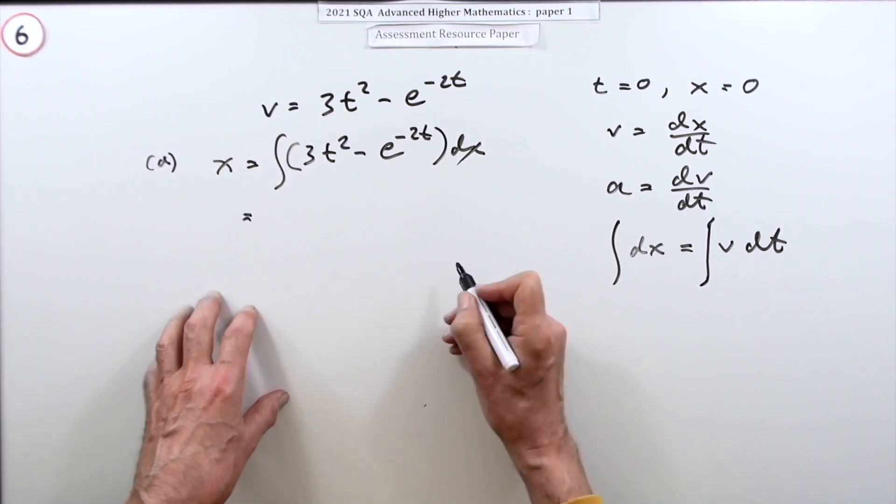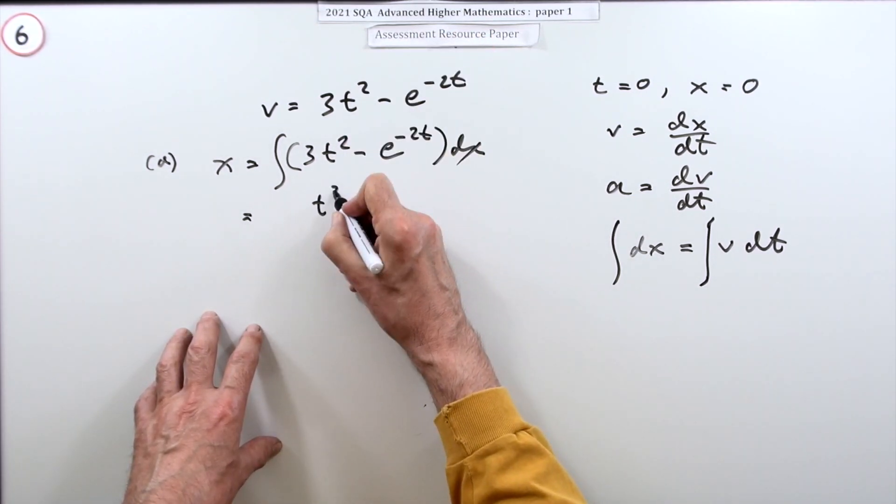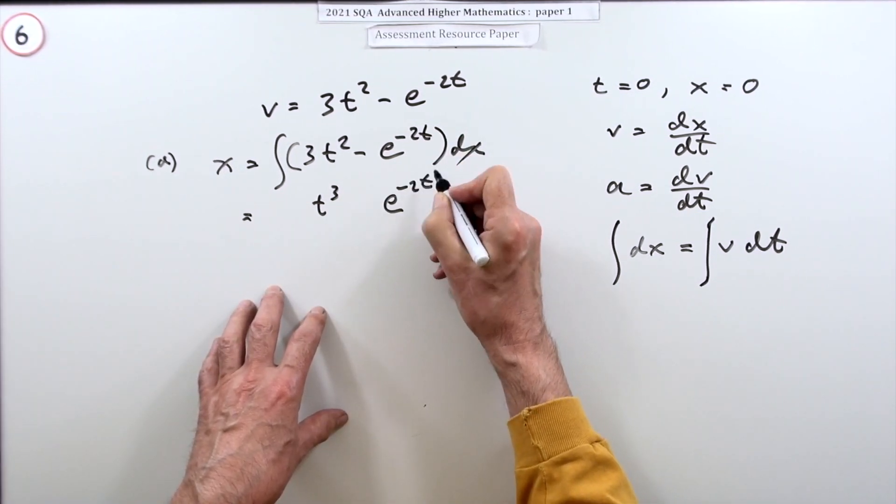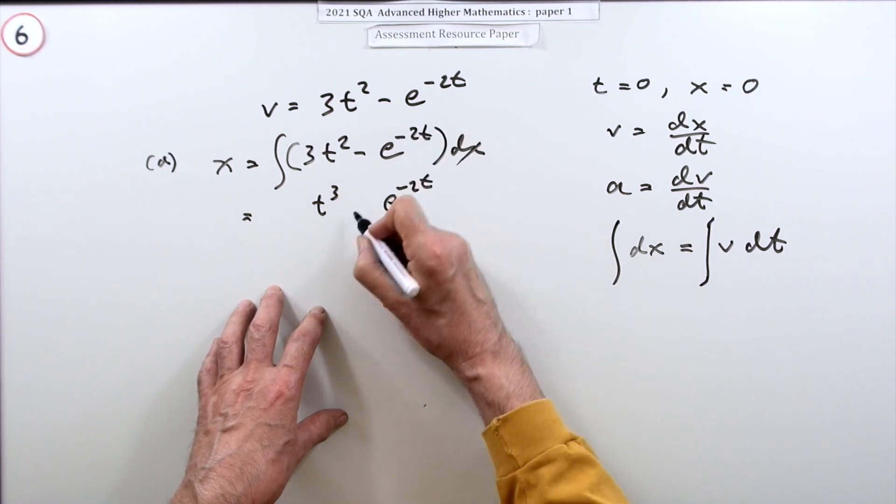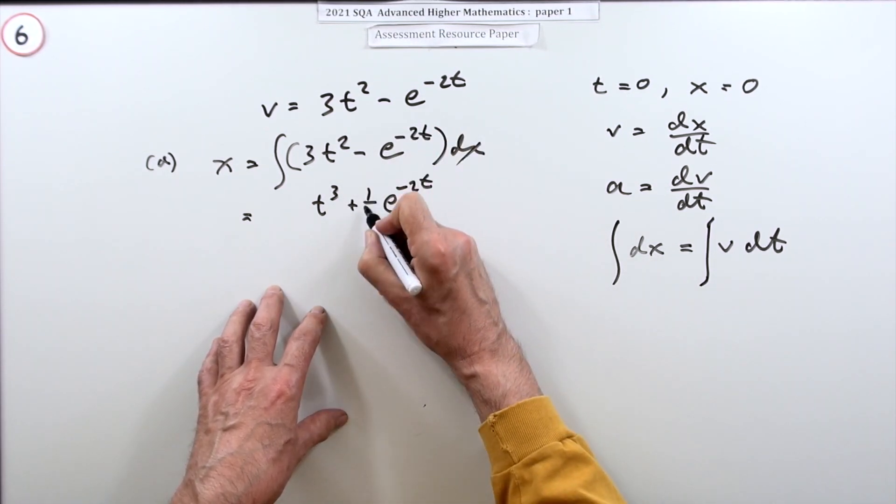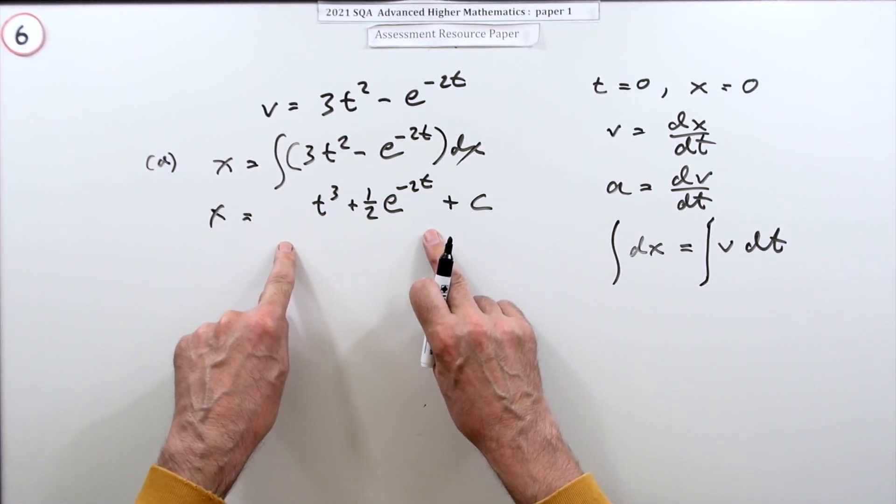dx doesn't get a mark. Integrate it: polynomial term, add 1 to the power, divide by the power - that's just a 1. Exponential term stays the same except divide by the inner derivative -2, so that'll be negative, makes that positive, divide by 2, that's a half, but plus c.